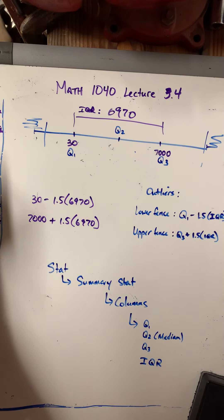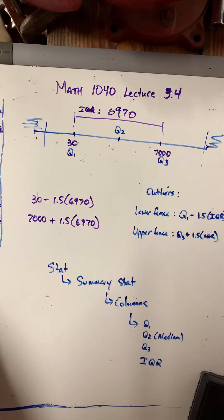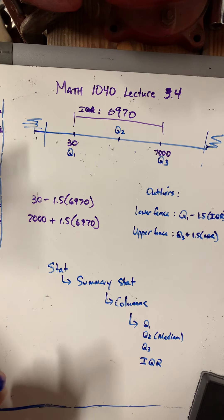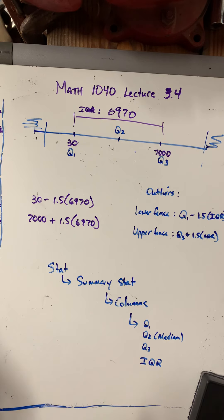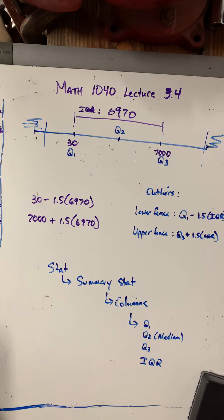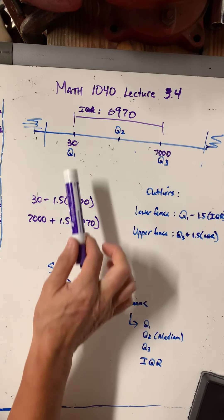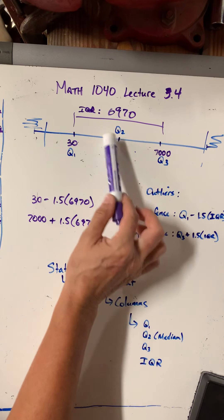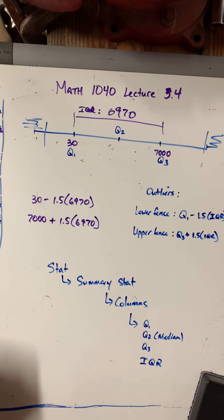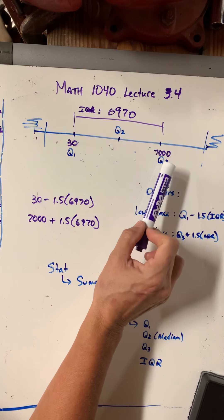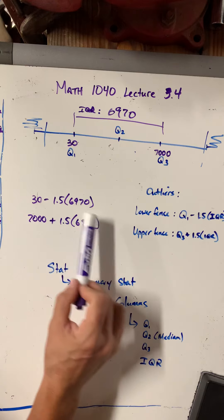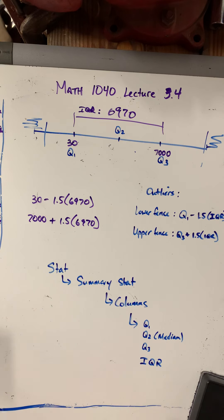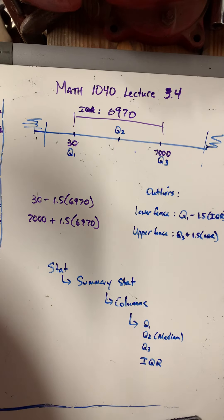That covers everything this section talks about: starting with z-scores, then percentiles — remember the 95th percentile means you scored better than 95% of people — then quartiles Q1, Q2, Q3, where Q2 is the median, the 50th percentile. We use these to find lower and upper fences with the IQR formulas to identify outliers. That's all for this lecture.